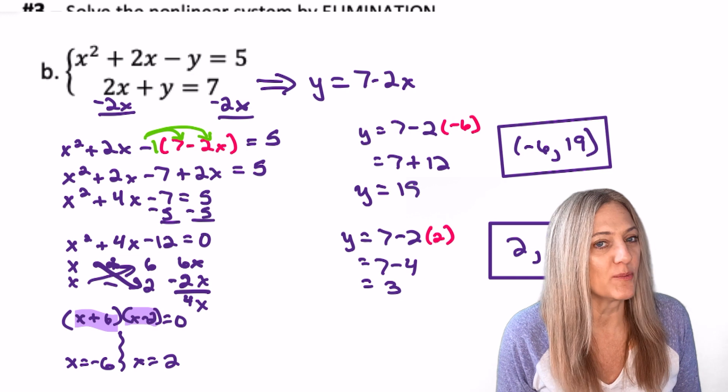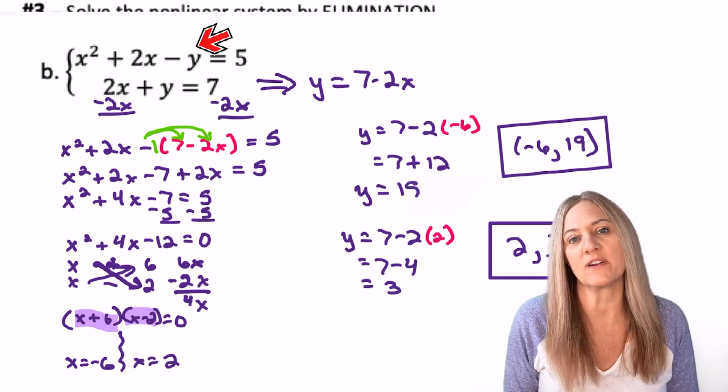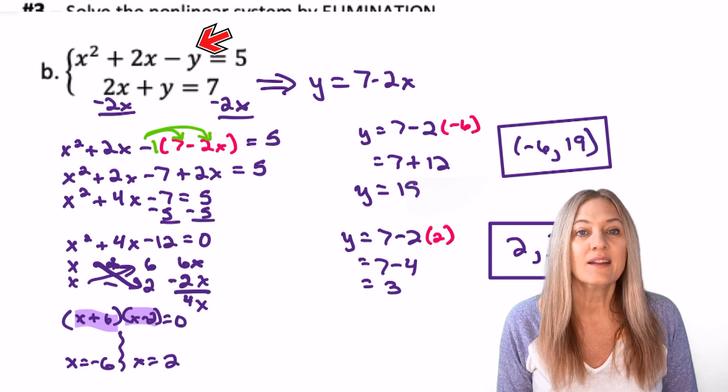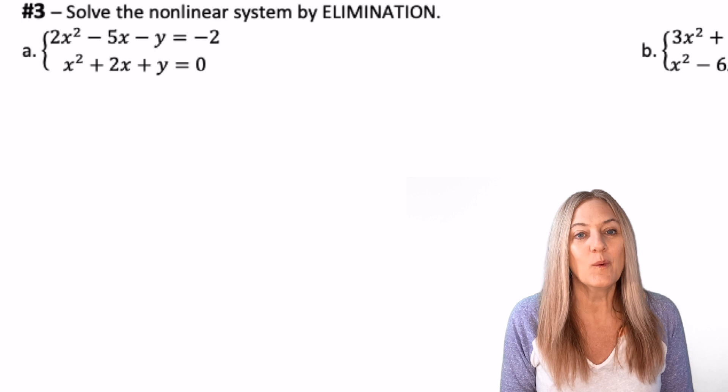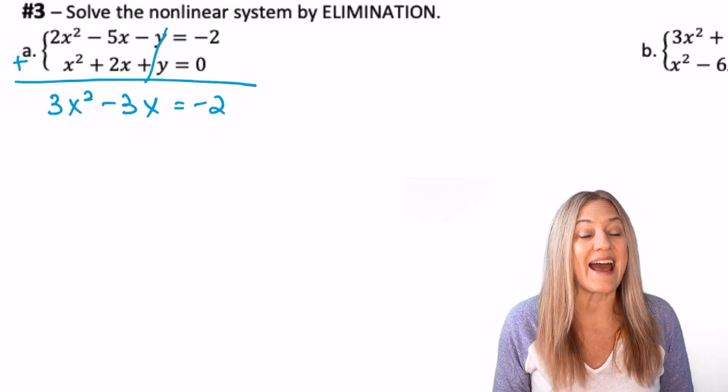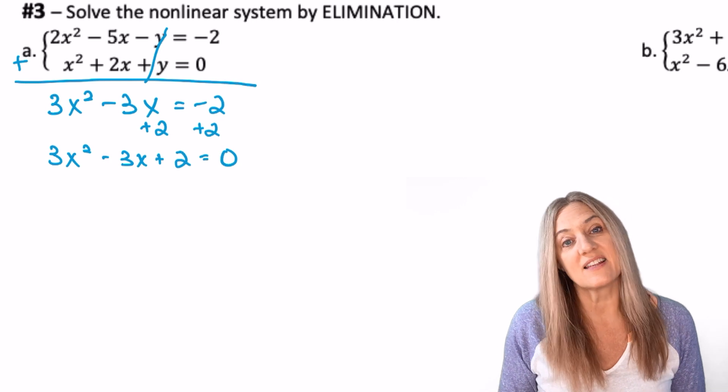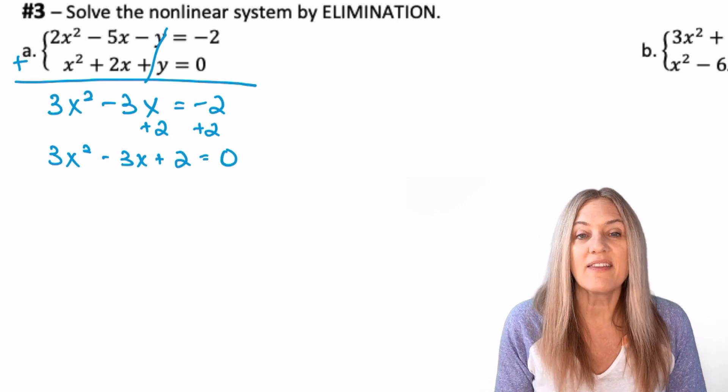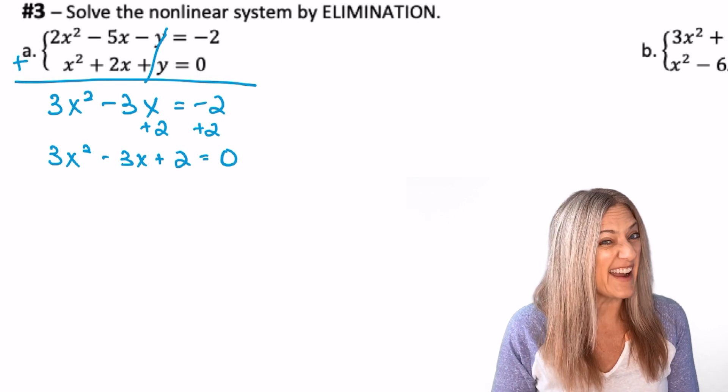If we look at that last substitution problem, we could have done it with elimination. The y's would have added out right away. Now let's try elimination on this next example. Once again, the y's are going to add out immediately. Once the y's are eliminated, we need to set the equation equal to zero and then determine which method we need to use to solve. Will this one factor?